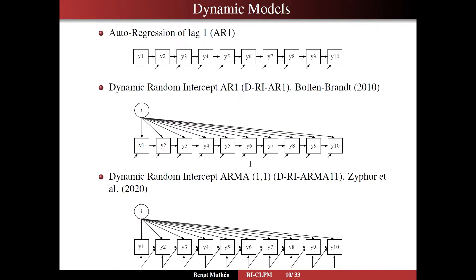On slide 10, we will then introduce dynamic models. And by dynamic models, I mean models where Y is regressed onto itself, so like the univariate parts of the classic CLPM. Here we have the autoregression of lag 1. Y1 influences Y2, Y2, Y3. Y3 is not influenced directly by Y1, but only indirectly. This model is standard in time series models, for instance.